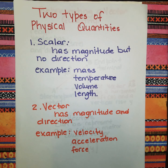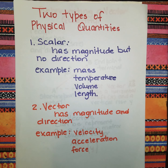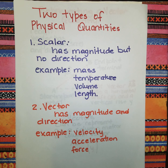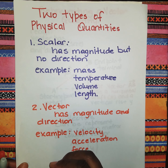Scalar quantities are quantities that have magnitude but no direction — for example, mass, temperature, volume, and time. A size or number is attached to these but they do not have a direction. Vectors, on the other hand, are quantities that have both magnitude and direction — for example, velocity, acceleration, and force given in newtons.